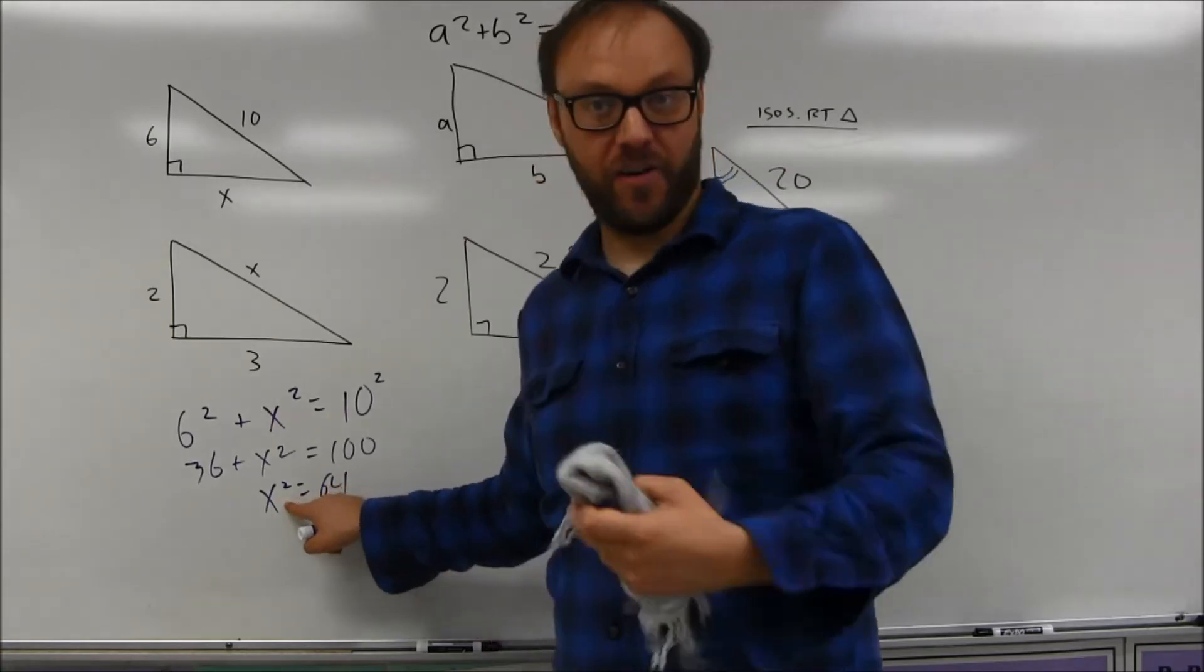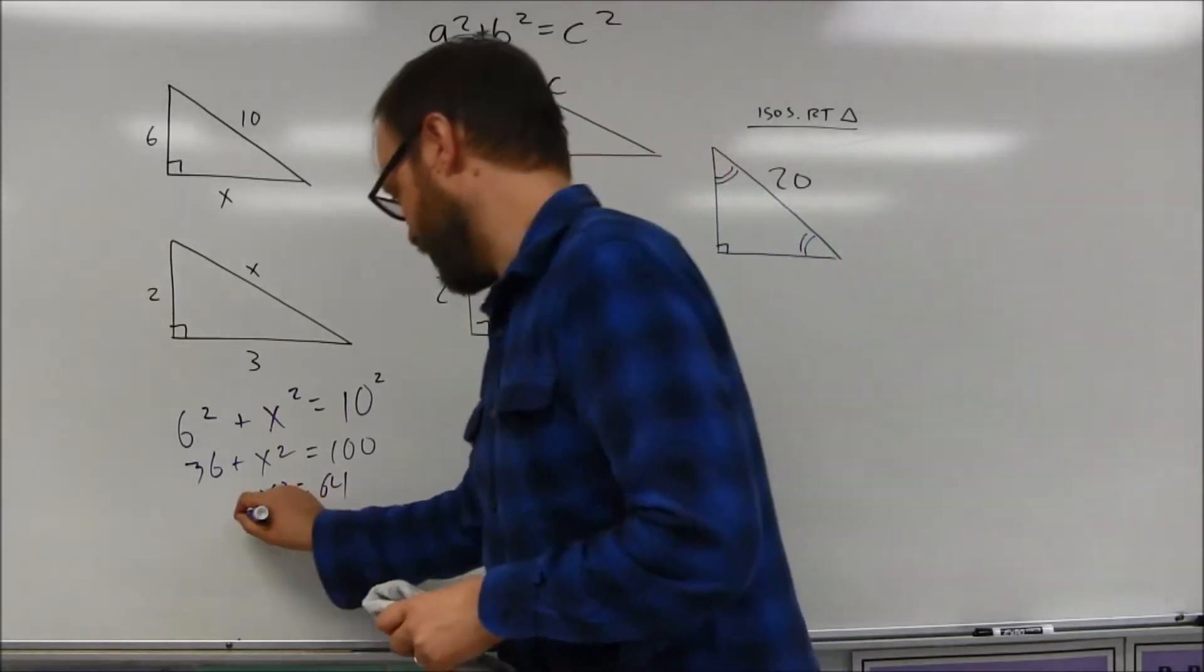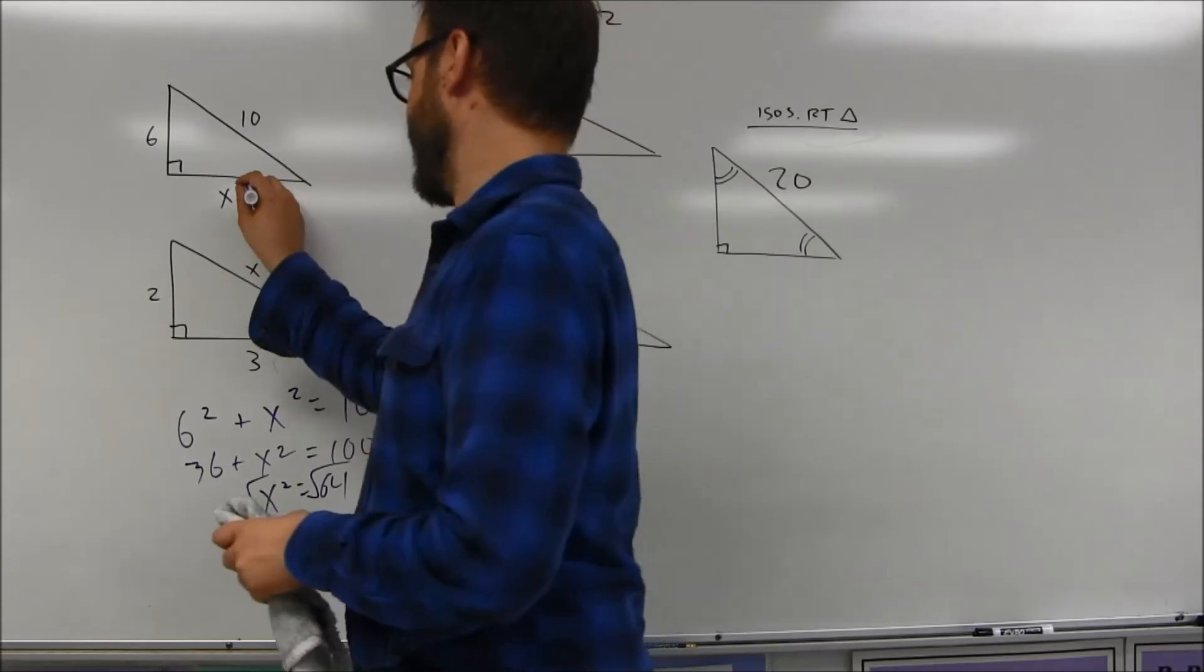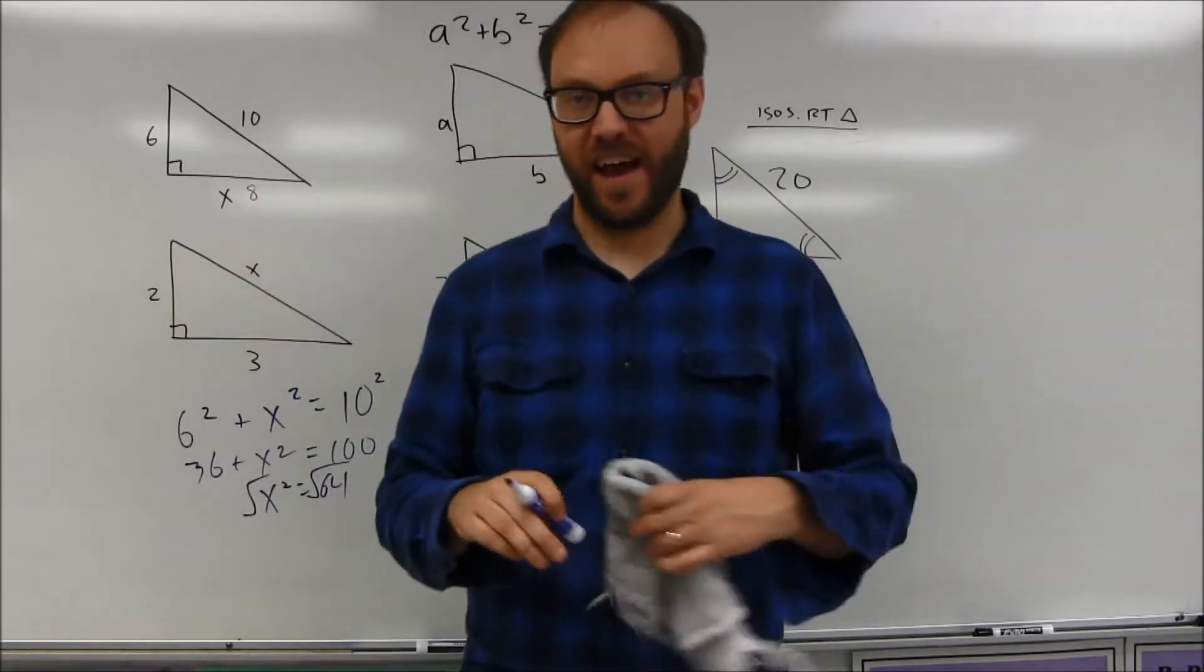Remember, you don't want x squared. You want x. So take the square root of both sides. The square root of 64 is going to end up being 8. And that's my missing side.